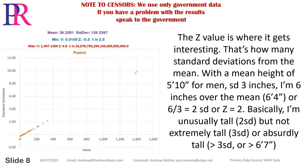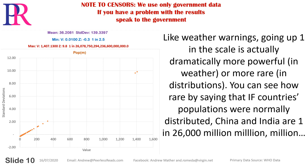The z-value is how many standard deviations from the mean. With a mean height of 5'10" for men and a standard deviation of 3 inches, I'm 6 inches over the mean at 6'4", so z equals 2 — unusually tall, but not extremely tall (z=3) or absurdly tall (z>3, over 6'7"). Like weather warnings, going up one level in the scale is dramatically more powerful or rare in distributions. You can see how rare: if countries' populations were normally distributed, China and India would be a one-in-26,000 trillion trillion event.